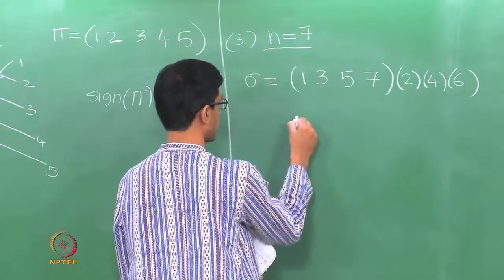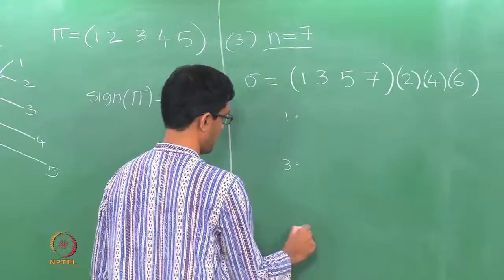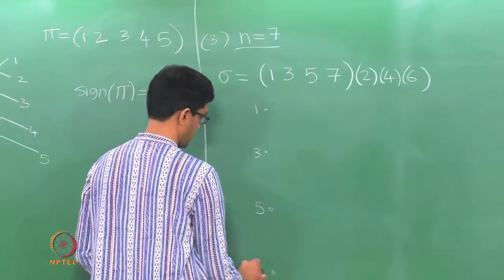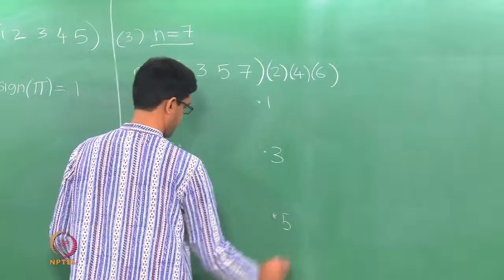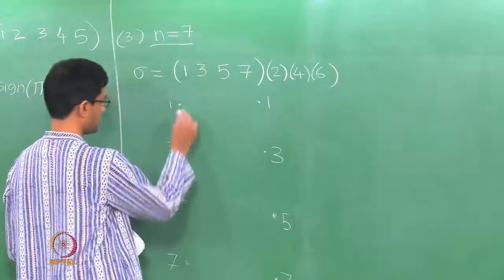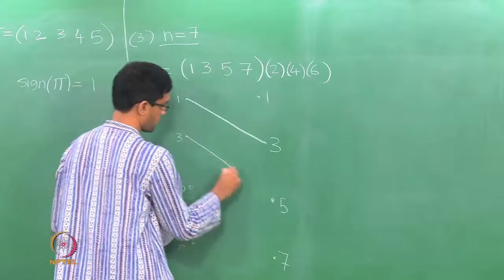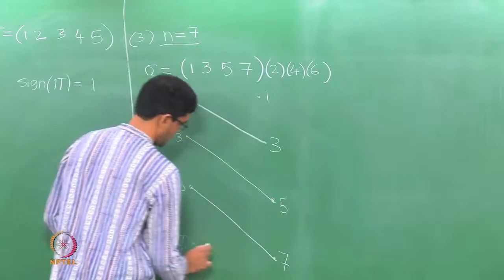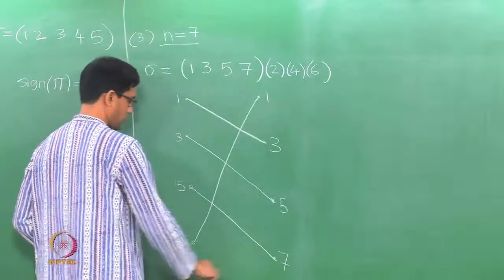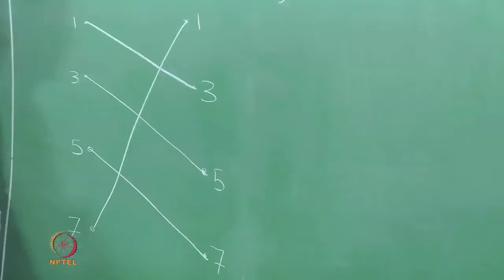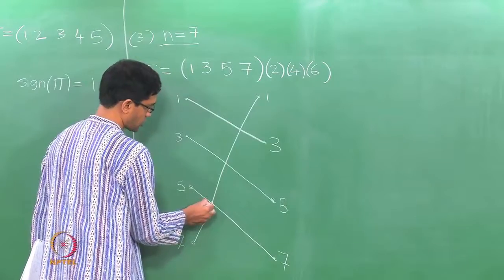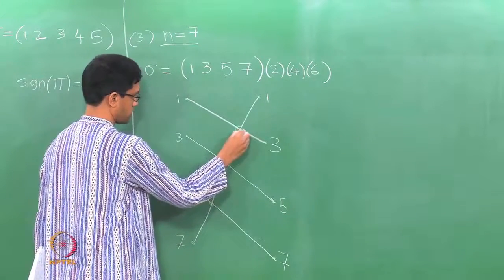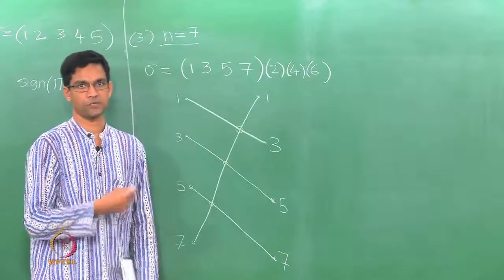First draw the points 1, 3, 5, and 7. The permutation is a 4-cycle on these numbers: 1 goes to 3, 3 goes to 5, 5 goes to 7, and 7 maps to 1. The number of crossings among these four lines is the same as in the 4-cycle we drew before — exactly 3 crossings among the numbers 1, 3, 5, and 7.